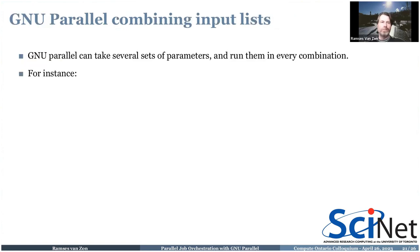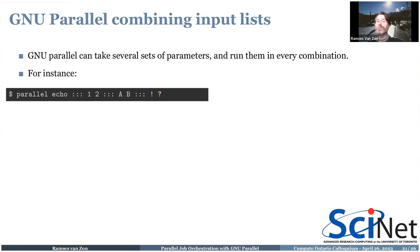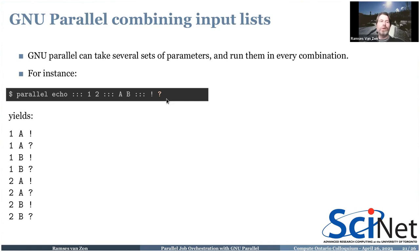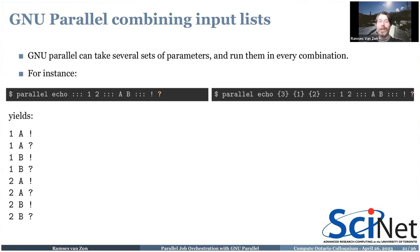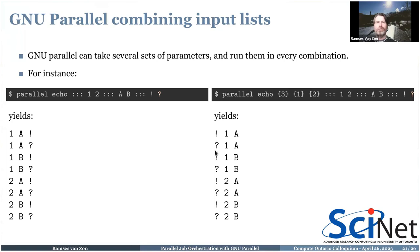You don't have to have just one input list — you can have several, and that's really powerful. A command with input list '1 2' and a second list 'a b' and a third list '! ?' runs every combination of them, which is perfect for parameter sweeps in several dimensions. If you need to reorder or reuse the inputs, use numbered replacement strings: {1} is from the first list, {2} from the second, {3} from the third.